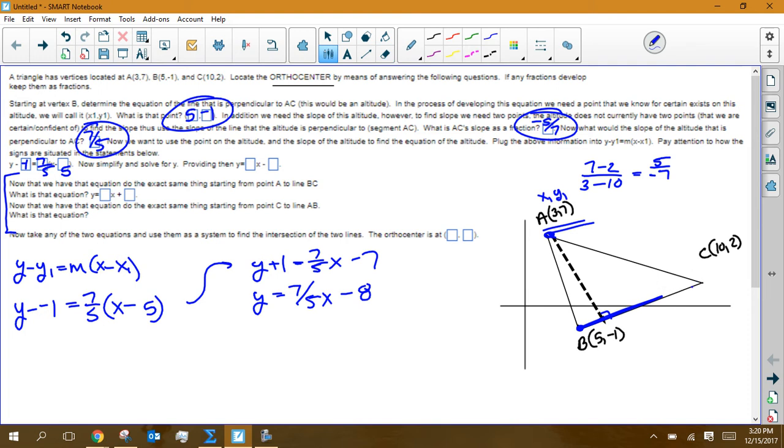So the slope of this blue one is going to be 10 minus negative 1. Sorry, 2 minus negative 1. Subtract your y's. And then 10 minus 5. So 2 minus negative 1, 10 minus 5. So 2 minus negative 1 is 3. 10 minus 5 is 5. So the slope of the blue line is 3 fifths. So the slope of the dotted line is negative 5 thirds.